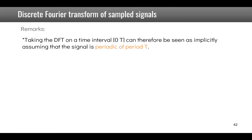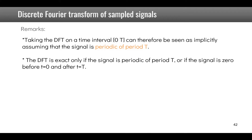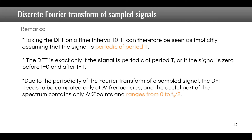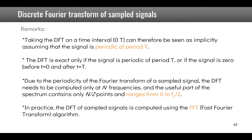A few important remarks: computing the DFT on an interval [0, T] implicitly assumes the signal is periodic with period T. The DFT is exact only if the signal is truly periodic with period T, or if it is zero outside [0, T]. Due to the periodicity of the sampled signal's Fourier transform, only N/2 frequency points are useful, ranging from 0 to fₛ/2. In practice, these DFTs are computed efficiently using the Fast Fourier Transform (FFT) algorithm.